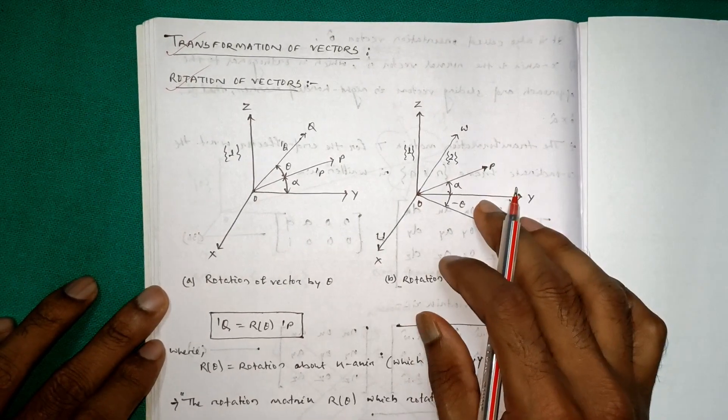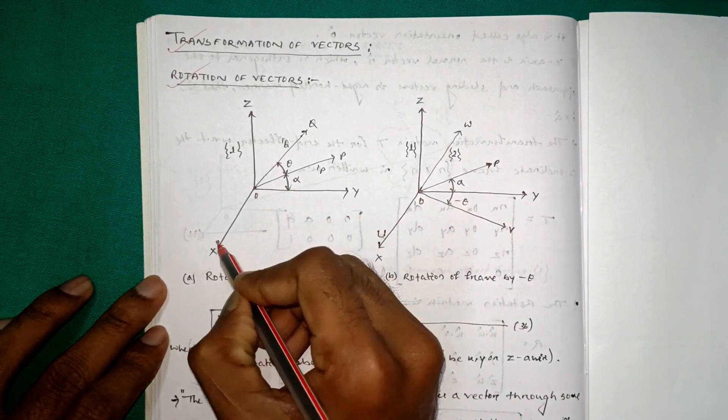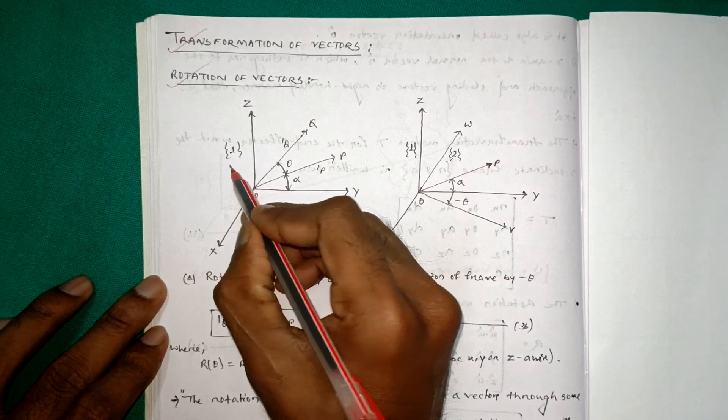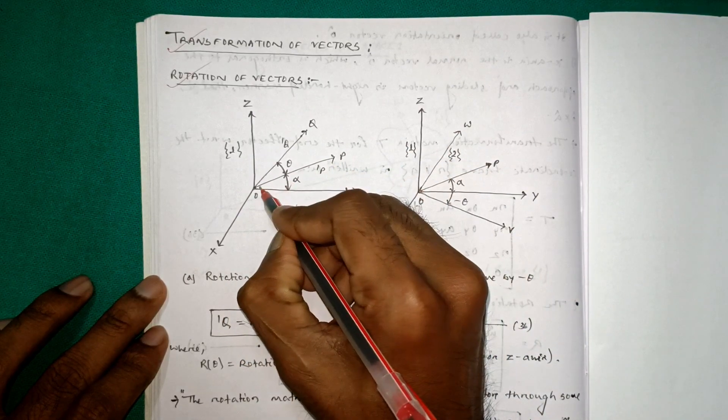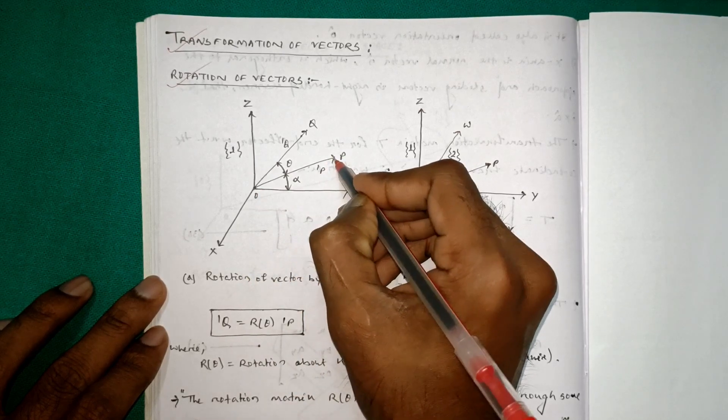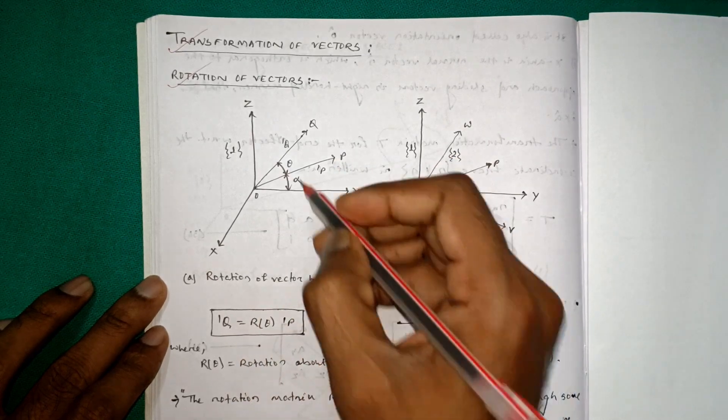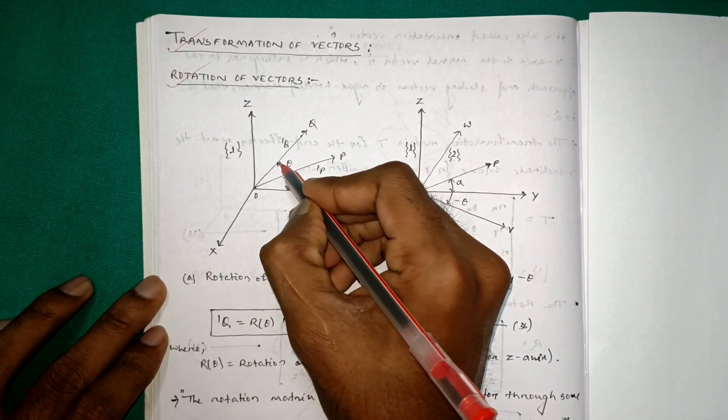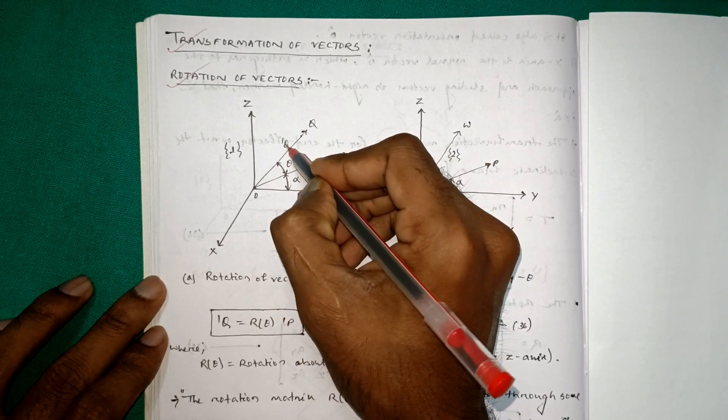There are three parts. The first one is rotation of vectors. Here we can see the point O and the principal axis X, Y and Z. This is frame 1. A point P is taken and this distance from O is equal to OP, that is 1P. After a rotation, rotation of vector by theta, so this angle is theta. After a theta rotation, we will get the point Q and this vector is 1Q.